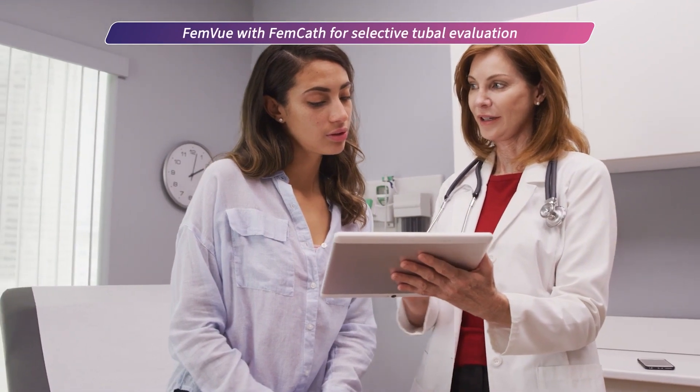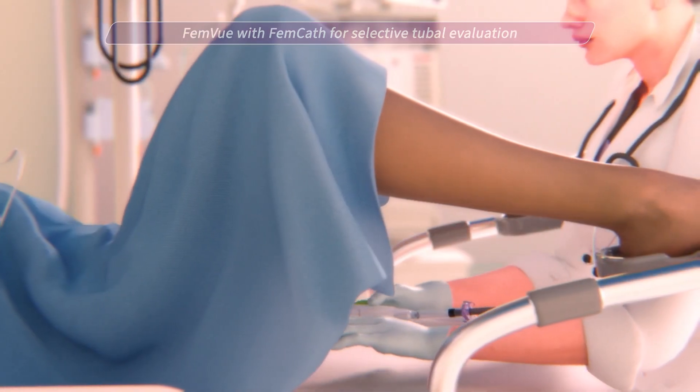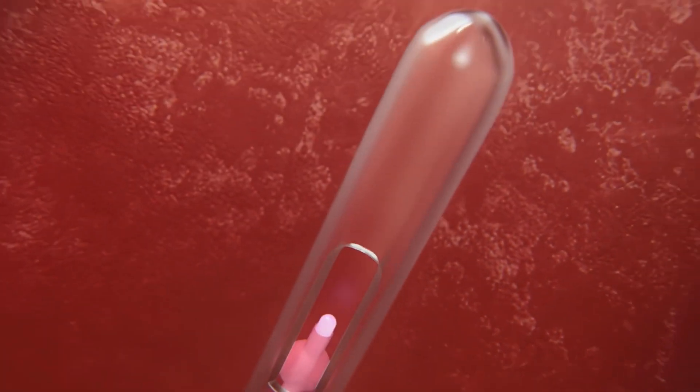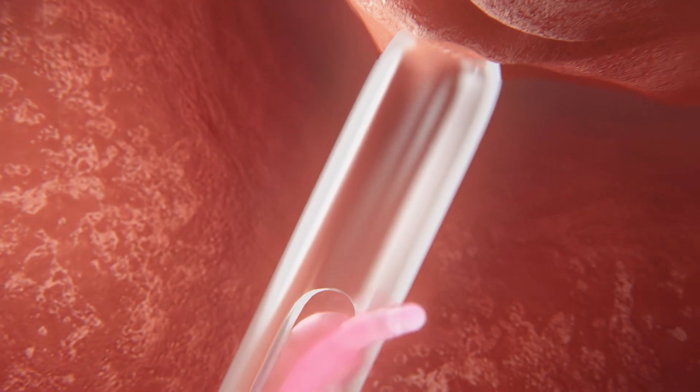FemVue with FemCath for selective tubal evaluation. FemCath is inserted into the uterine cavity. The balloon catheter is inflated at the opening of the selected fallopian tube.